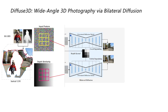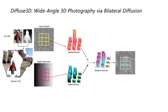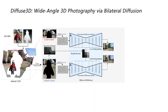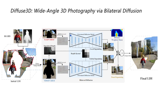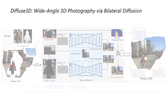Specifically, we alter the denoising mechanism of the diffusion model from a single spatial kernel to the bilateral kernel. Besides, we propose a local-global balancing approach to maximize contextual understanding. With these strategies, our method facilitates wide-angle 3D photography from a single view.